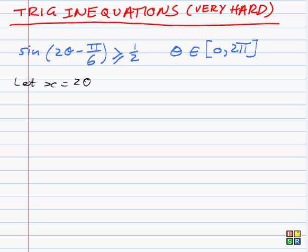What you do is you firstly simplify it by making a substitution. Let x = 2θ - π/6. So therefore what we're really trying to solve is sin x ≥ 1/2. And just like in previous questions, when you make that substitution, you have to change the range for the new variable.